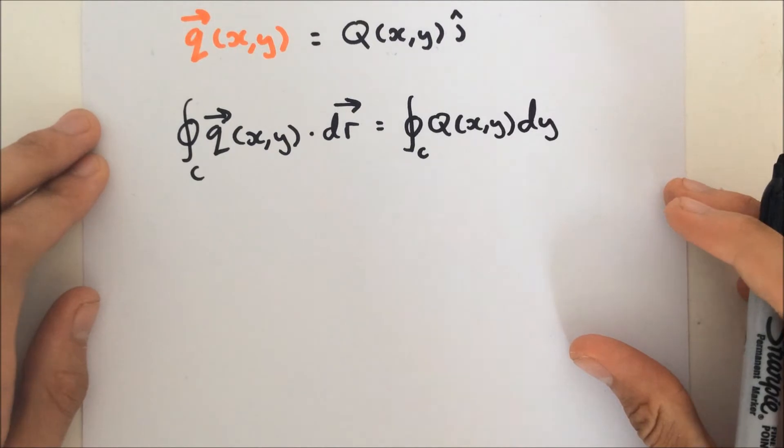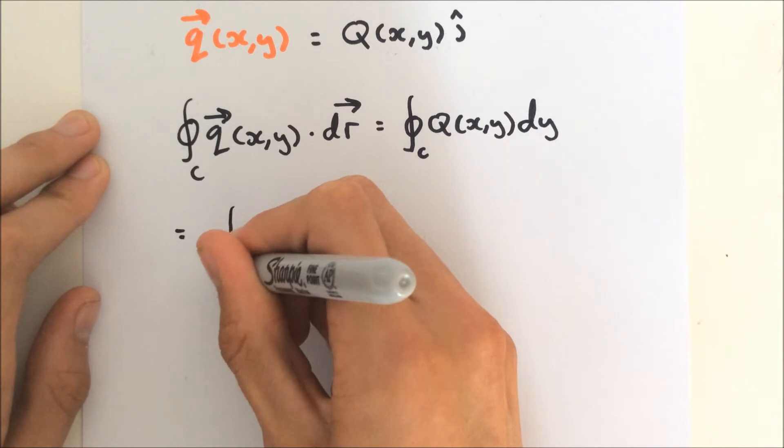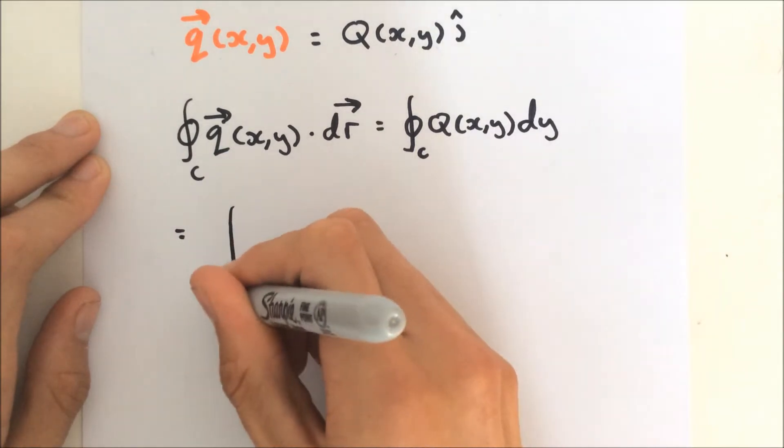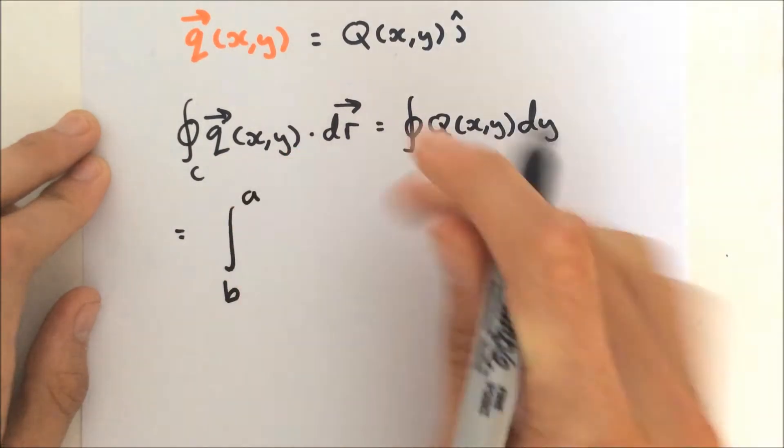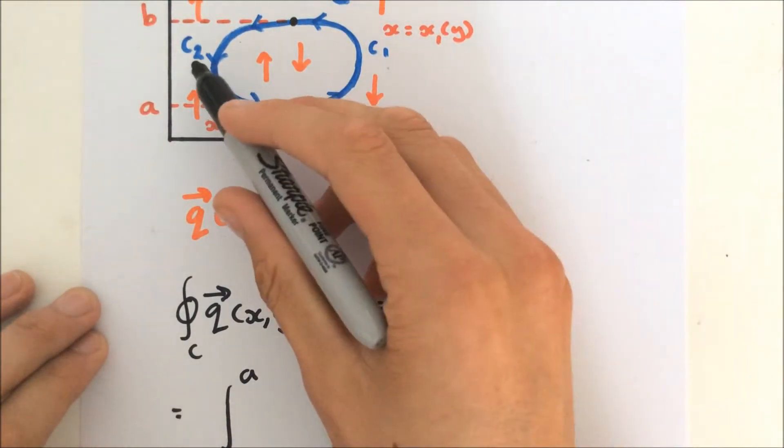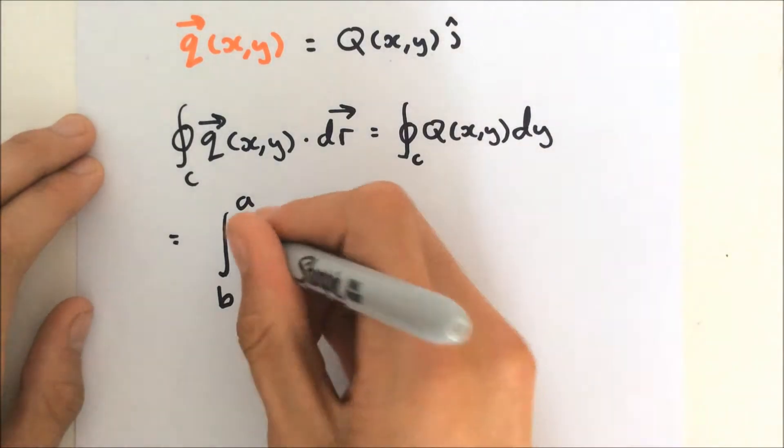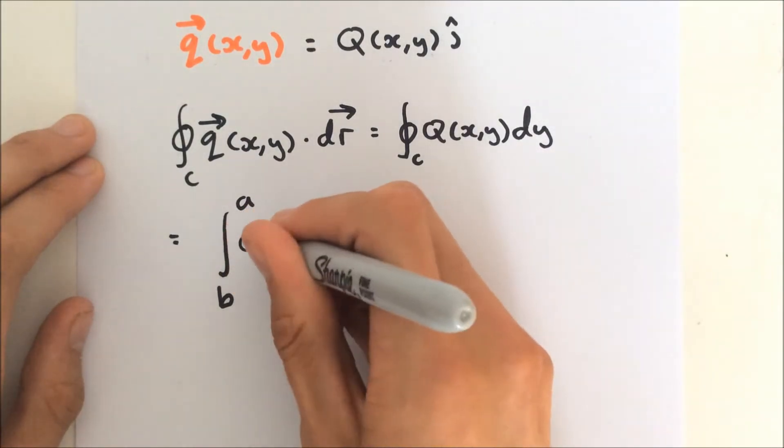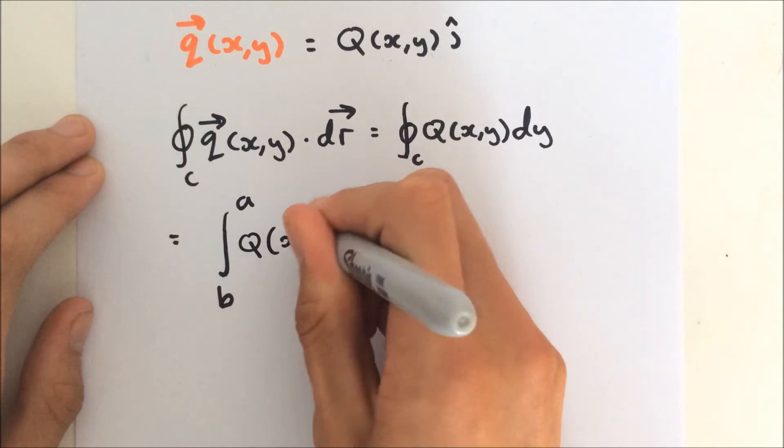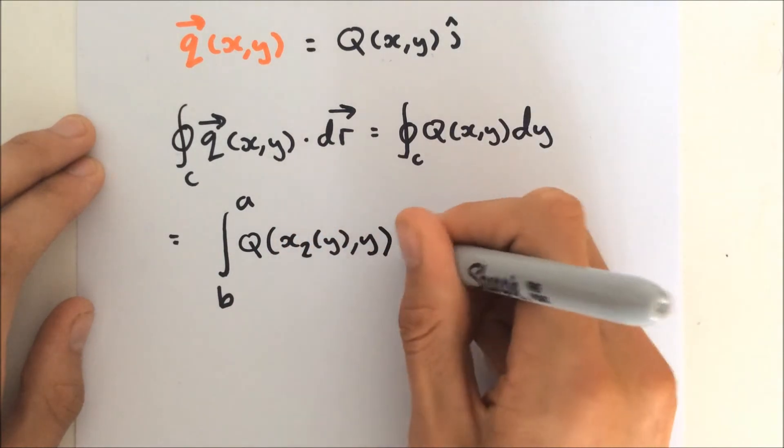So what's this equal to? This is equal to the integral from B to A, because that's C2. The integral from B to A of Q of x2(y), y, dy.